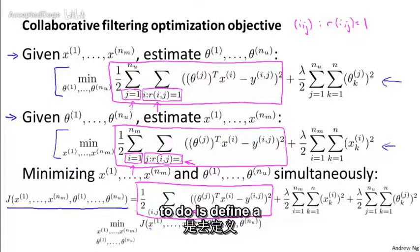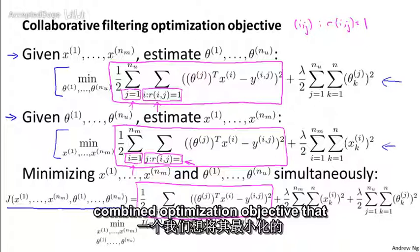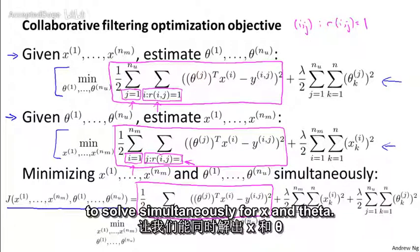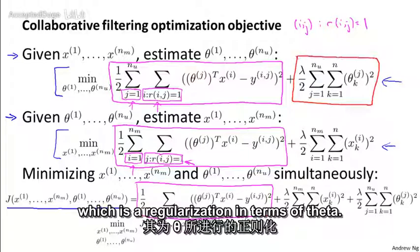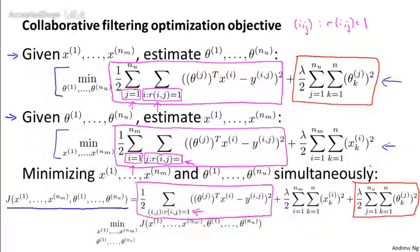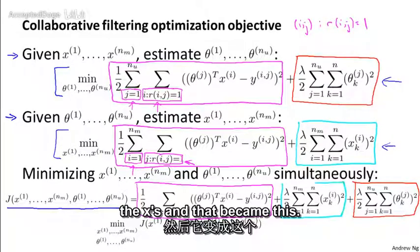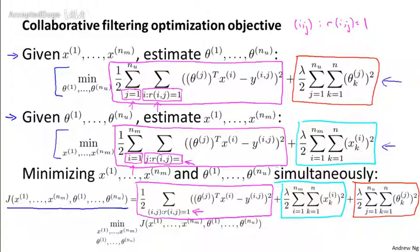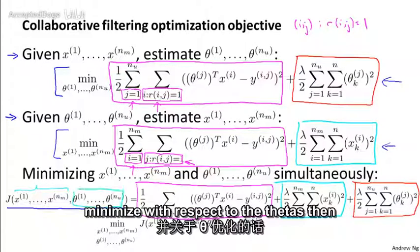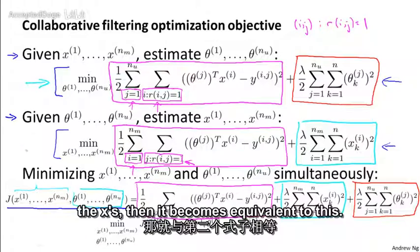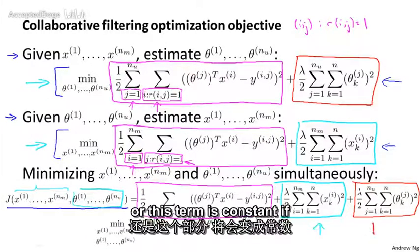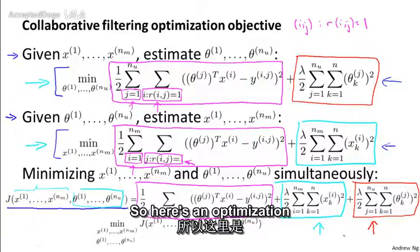So what we're going to do is define a combined optimization objective that we minimize simultaneously for x and theta. The other terms are a regularization term in theta, and a regularization term for x. This optimization objective J has an interesting property: if you hold the x's constant and minimize with respect to the theta's, you solve exactly the first problem. If you hold the theta's constant and minimize only with respect to the x's, it becomes equivalent to the second problem.